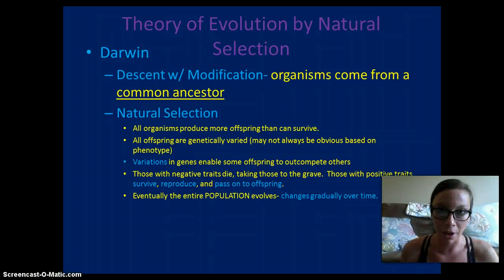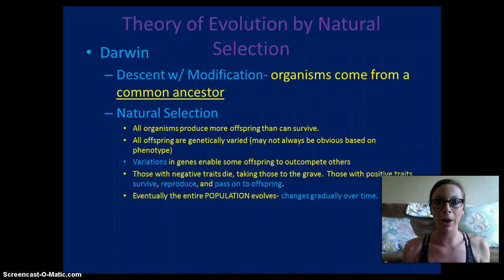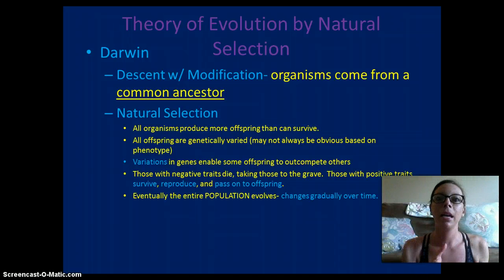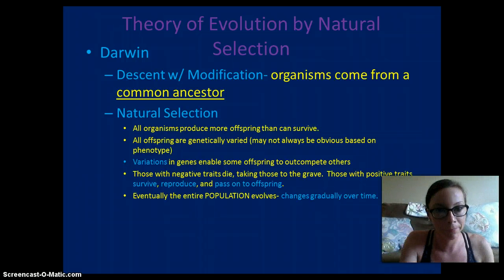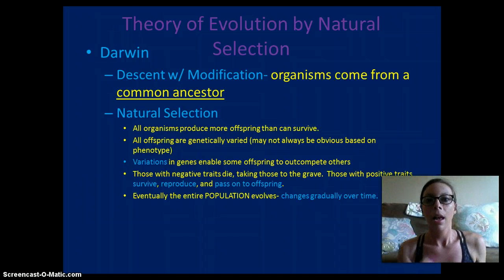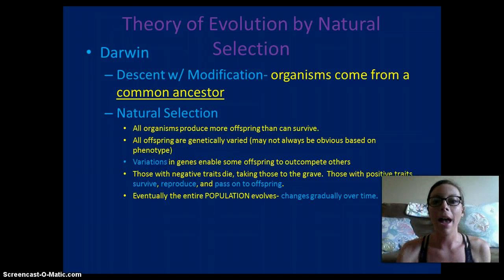For example, if we had a population of insects — red and green beetles — and their habitat was on a leaf, the green beetles would survive better because they are camouflaged, while the red beetles are not. So birds will eat the red beetles and the green beetles will survive and reproduce. Those with negative traits die, and those with positive traits will survive, reproduce, and pass those positive traits on to their offspring. Eventually, the entire population will evolve, and the changes happen gradually over time.